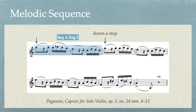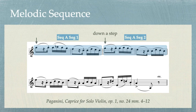In analysis, we would label the first two measures as the first segment of the sequence — say A, for example, if this is the beginning of our analysis. Then the repeated statement is the second statement of the sequence, so Sequence A, Segment 2. If there are more repetitions, we can continue on to Segment 3 and 4 and so forth.